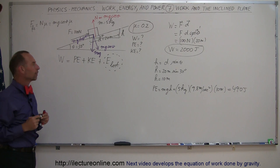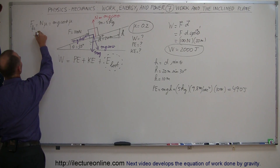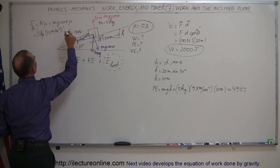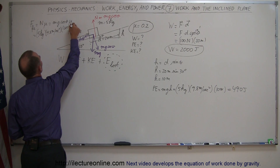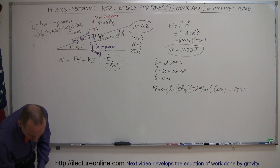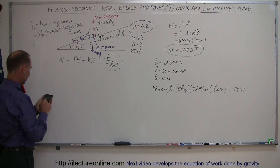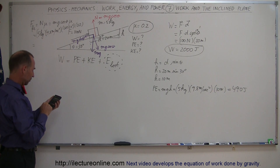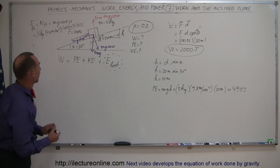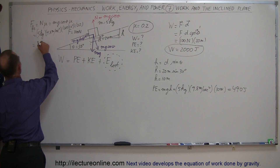Let's calculate the friction force. With mass = 5 kg, g = 9.8 m/s², cos(30°), and μ = 0.2: F_friction = 5 × 9.8 × cos(30°) × 0.2 = approximately 8.5 newtons.